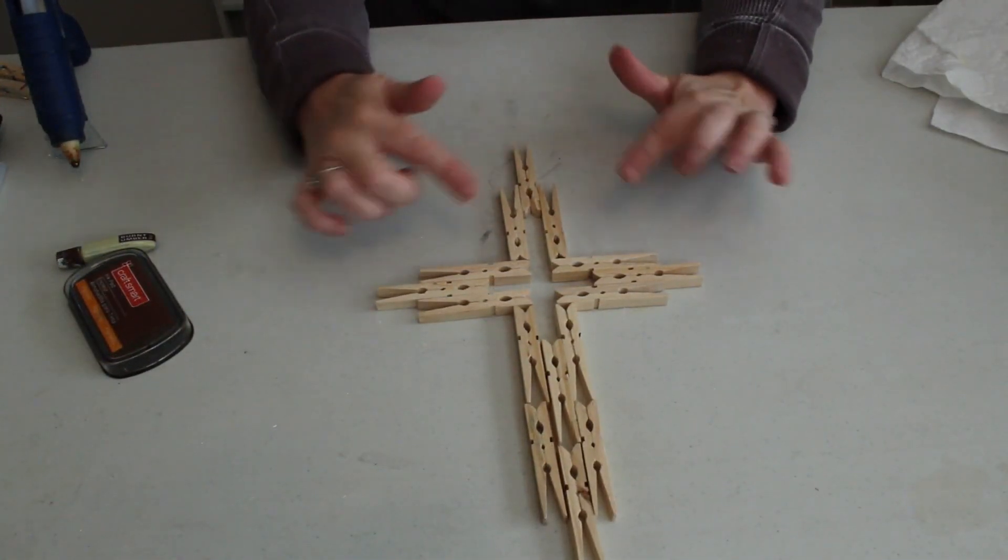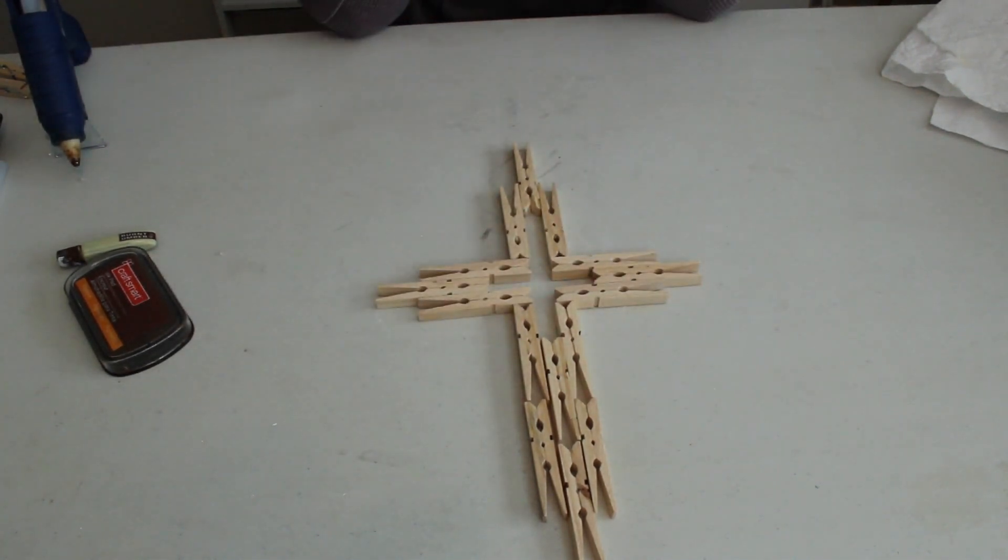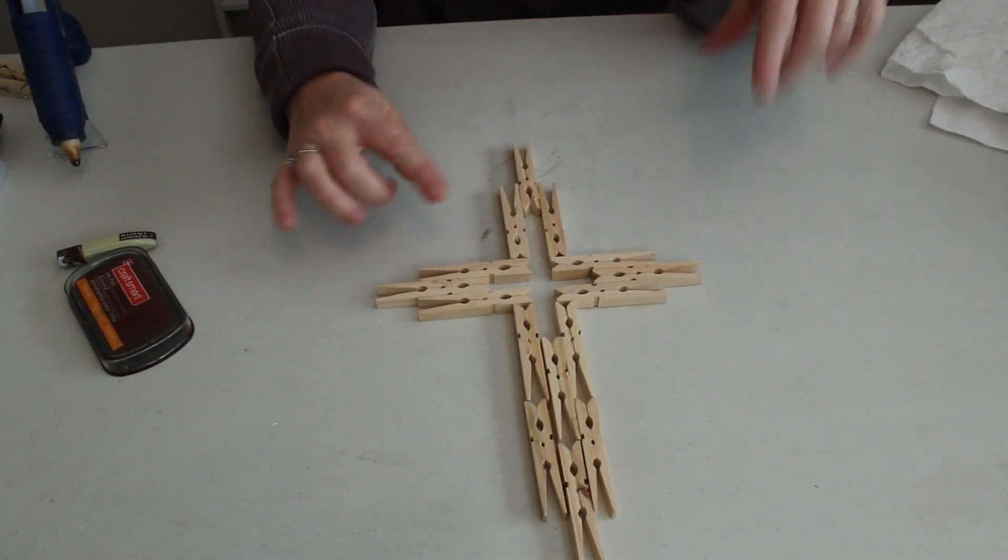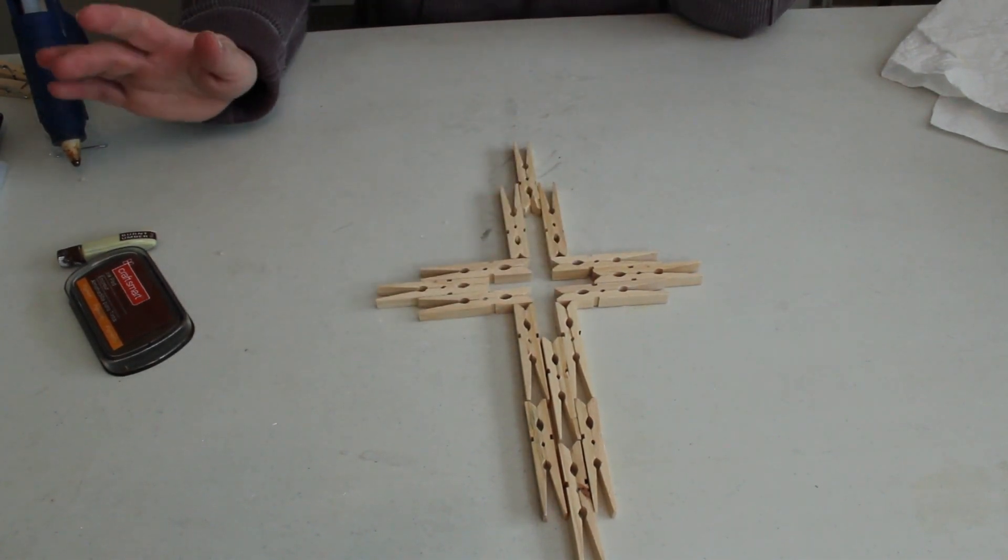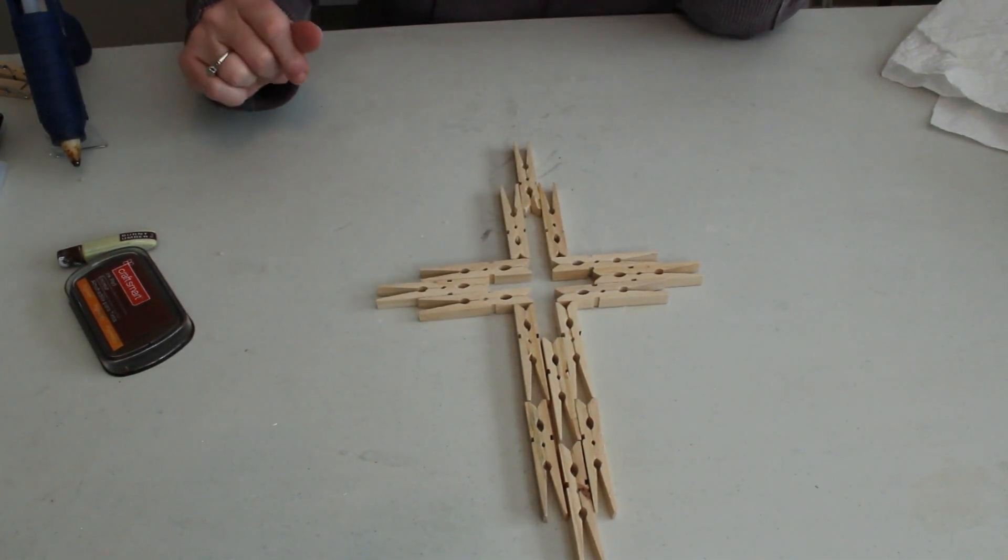So we're going to do three that way and then we're going to glue three more onto the end. So we're going to lay them out three, three, three and three and we're going to glue those together. Now you can see it has formed a cross in the center and that's what I wanted it to do. So let's go glue it down and I'll be right back.